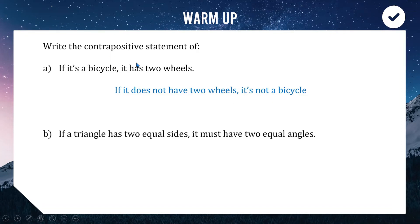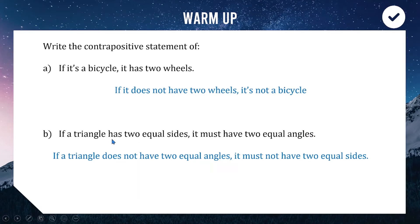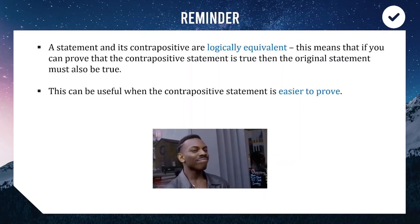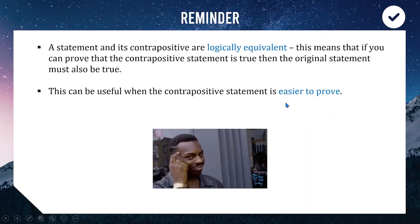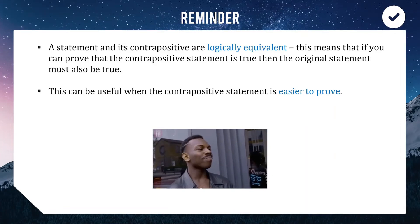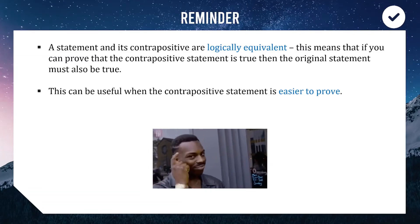Our original statement was true — if it's a bicycle it has two wheels — and our contrapositive statement is also true. This always happens with contrapositives: if your original statement is true, so is your contrapositive; if your original is false, so is your contrapositive. They are referred to as logically equivalent. For our second example: if a triangle has two equal sides it must have two equal angles. The contrapositive is: if a triangle does not have two equal angles, it must not have two equal sides. This is really useful because sometimes the contrapositive is much easier to prove.